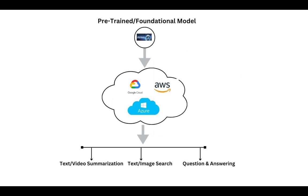Once deployed, your LLM will typically address one or more of three broad use cases. Firstly, there's text and image summarization, which involves condensing large volumes of unstructured data into more manageable summaries. Next, you have text and image search alongside Q&A — question answering capabilities — where the LLM directly responds to user inquiries. These search functions can be tailored to various scenarios, allowing the LLM to find and summarize content related to specific text or image inputs. Alternatively, the model can engage in detailed conversations with users, adapting its responses based on context. The application of LLMs can be highly versatile, depending on what you need to achieve.